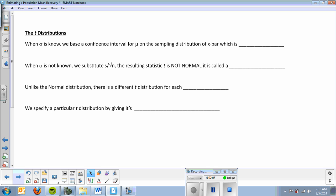The T distribution. Unfortunately, this is where we part ways momentarily with the Z table. When sigma is known, we base the confidence interval for mu on the standard distribution for X bar, which is normal. When sigma is not known, we substitute S over the square root of N, and the resulting statistic is not normal. It is called a T distribution.